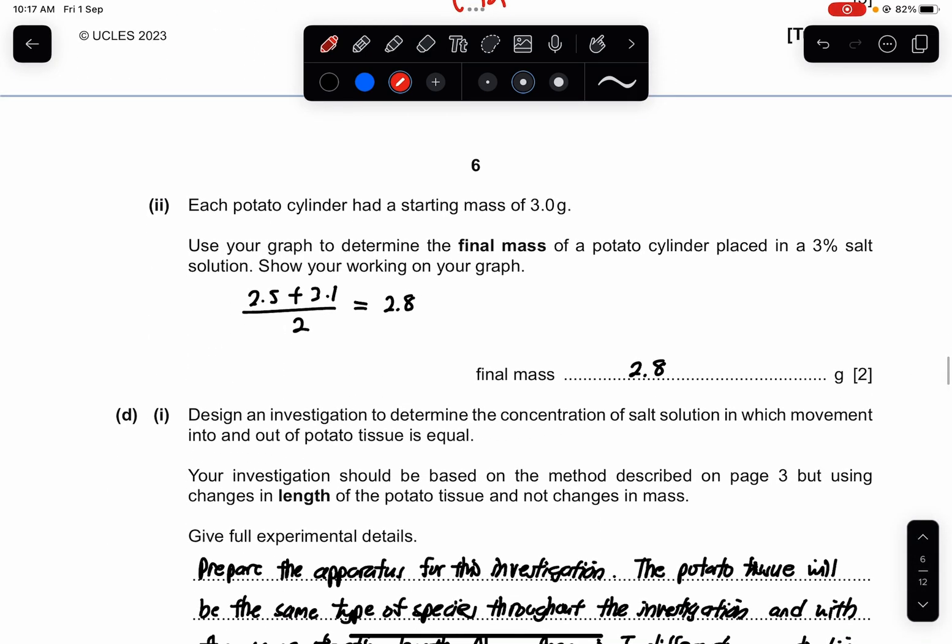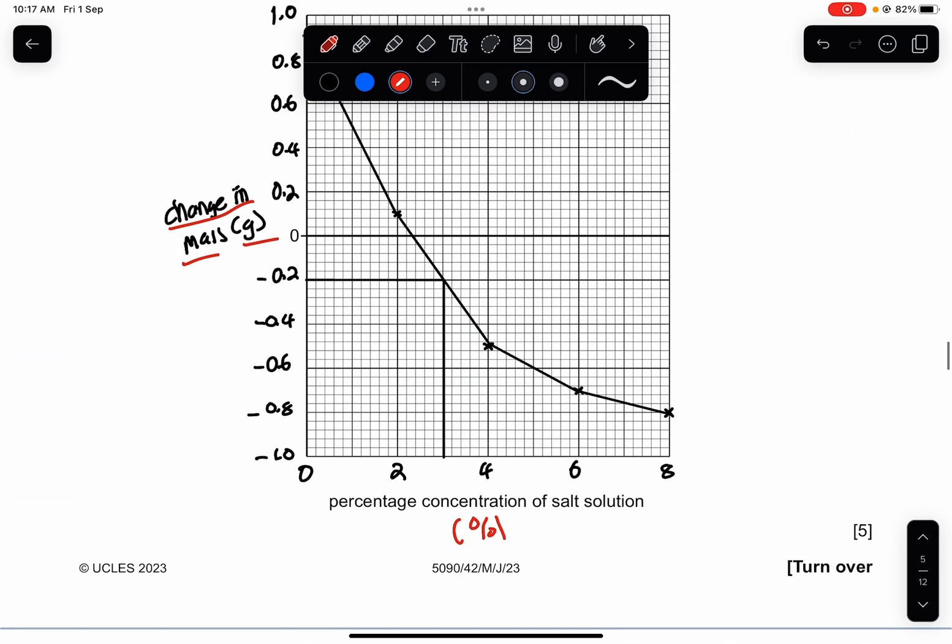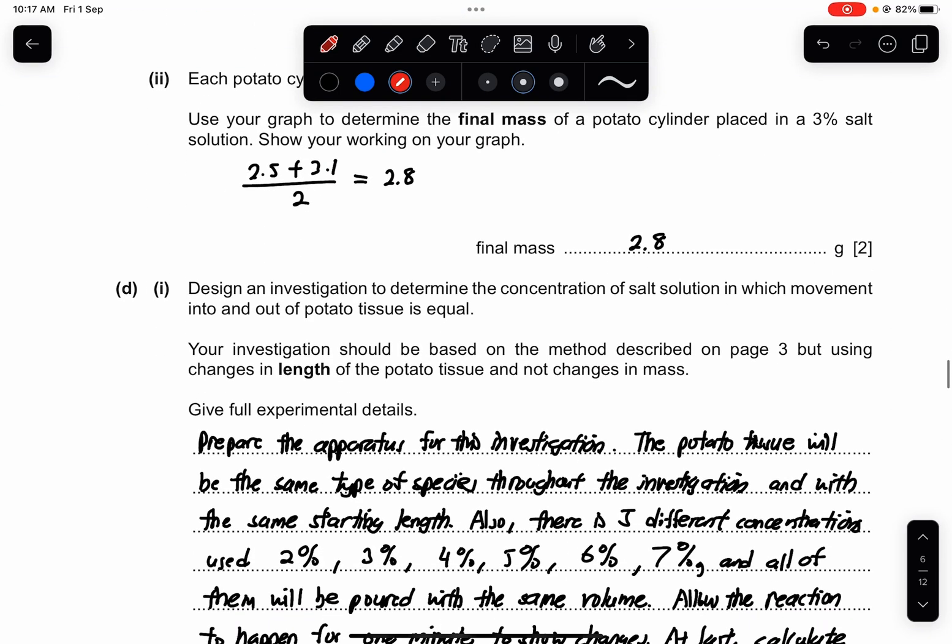Part 2 is asking for each potato cylinder had a starting mass of 3 grams. Use your graph to determine the final mass of the potato cylinder placed in a 3% salt solution. Show your working on your graph. So you see from 3 grams, I guess minus 0.2. So this is meaning it's at 2.5 plus 3.1 over 2 would be 2.8. So the final mass would be 2.8 grams.